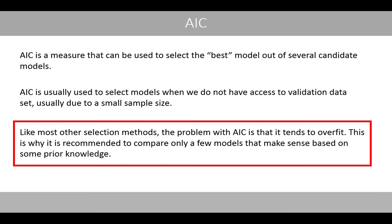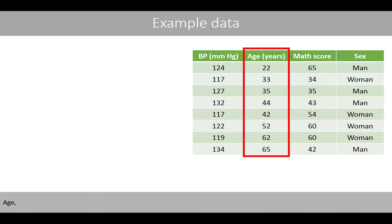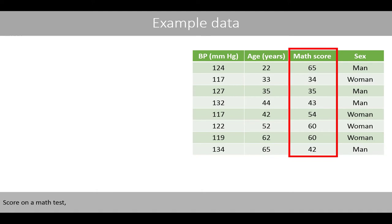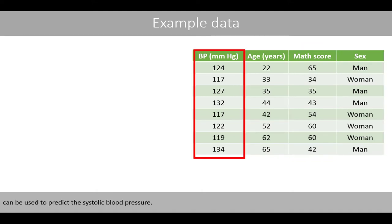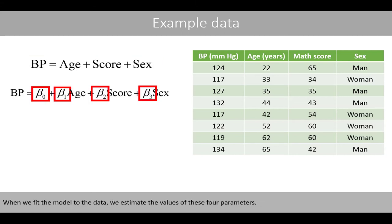Like most other selection methods, the problem with AIC is that it tends to overfit. This is why it is recommended to compare only a few models that make sense based on some prior knowledge. To explain how model selection works, we use a small dataset where the aim is to test if the variables age, score on a math test, and sex can be used to predict the systolic blood pressure. Let's fit the following model to the data — this model includes all explanatory variables. When we fit the model to the data, we estimate the values of these four parameters.